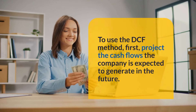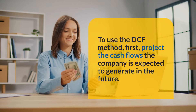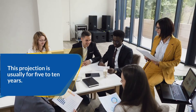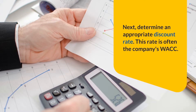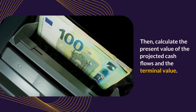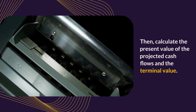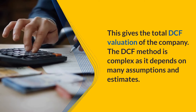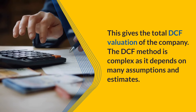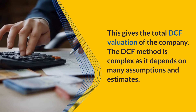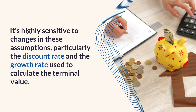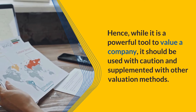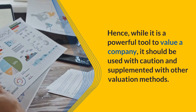To use the DCF method, first project the cash flows the company is expected to generate in the future, usually for five to ten years. Next, determine an appropriate discount rate — this rate is often the company's WACC. Then calculate the present value of the projected cash flows and the terminal value, which gives the total DCF valuation. The DCF method is complex as it depends on many assumptions and estimates, and is highly sensitive to changes in the discount rate and growth rate used to calculate the terminal value. Hence, while it is a powerful tool, it should be used with caution and supplemented with other valuation methods.